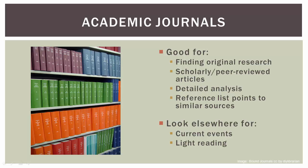Publication in an academic journal is a rigorous affair. Unlike newspaper or magazine articles, academic journal articles are typically submitted to a review committee of professionals who determine if an article meets the standards of the publication. The process, called peer review, is a key feature of the academic journal format.